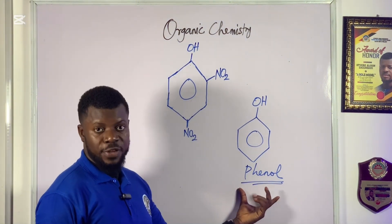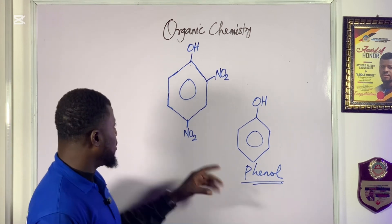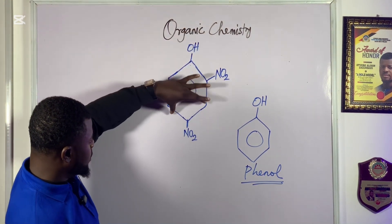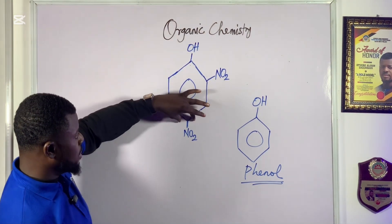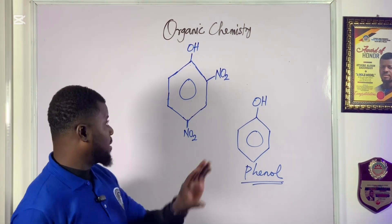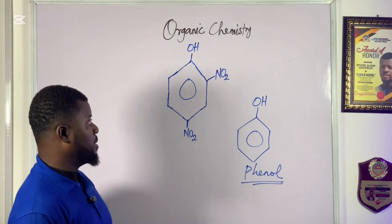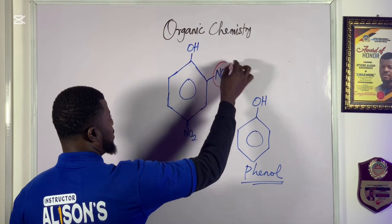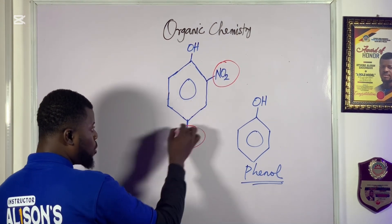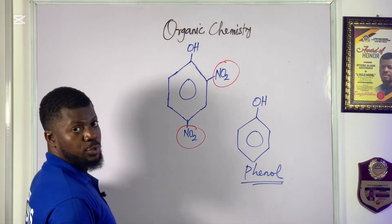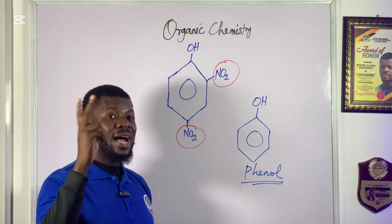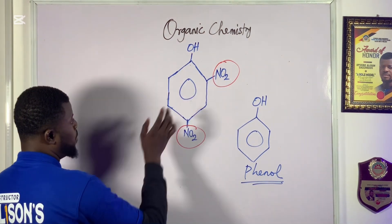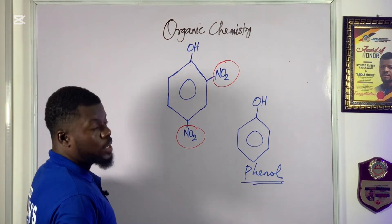Does that make sense? Now looking at this compound, you're already seeing the benzene ring here. We have two substituents attached to this benzene ring. The first one is a nitro group, and the second one is also a nitro group. So we have two nitro groups at different positions on this molecule.